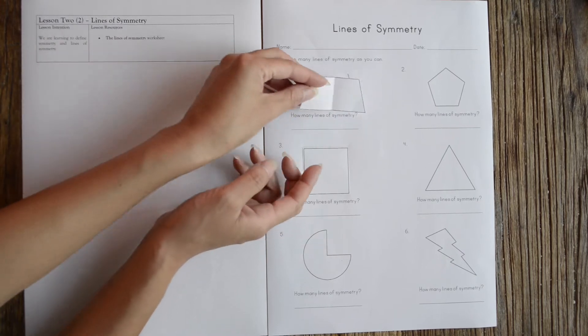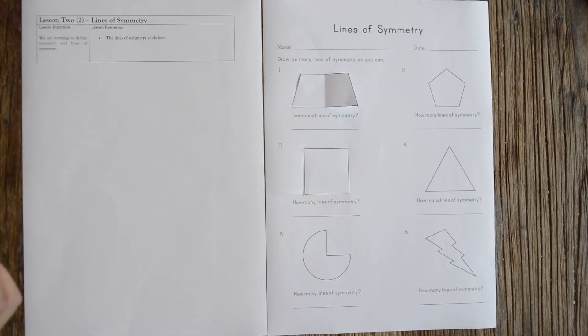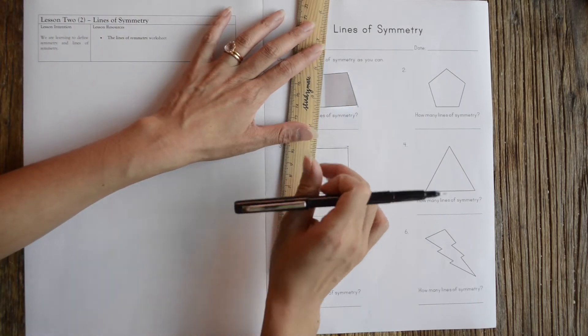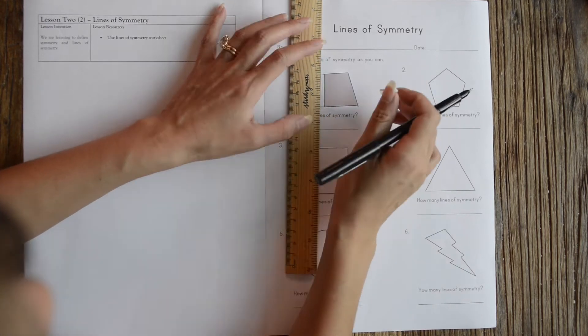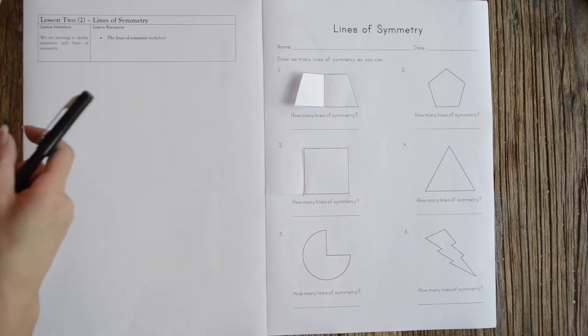If you had it in your book, all you would have to do is draw the line of symmetry. Use a ruler or even an edge of a piece of paper to draw your line in the middle. Now that's got one line of symmetry.